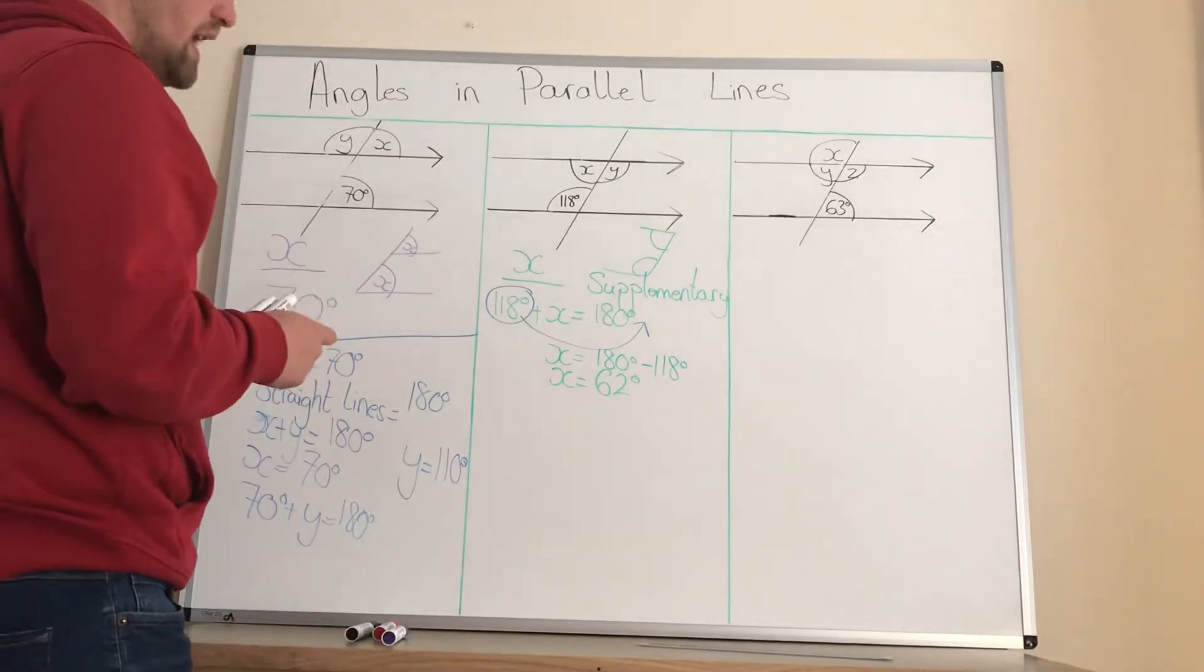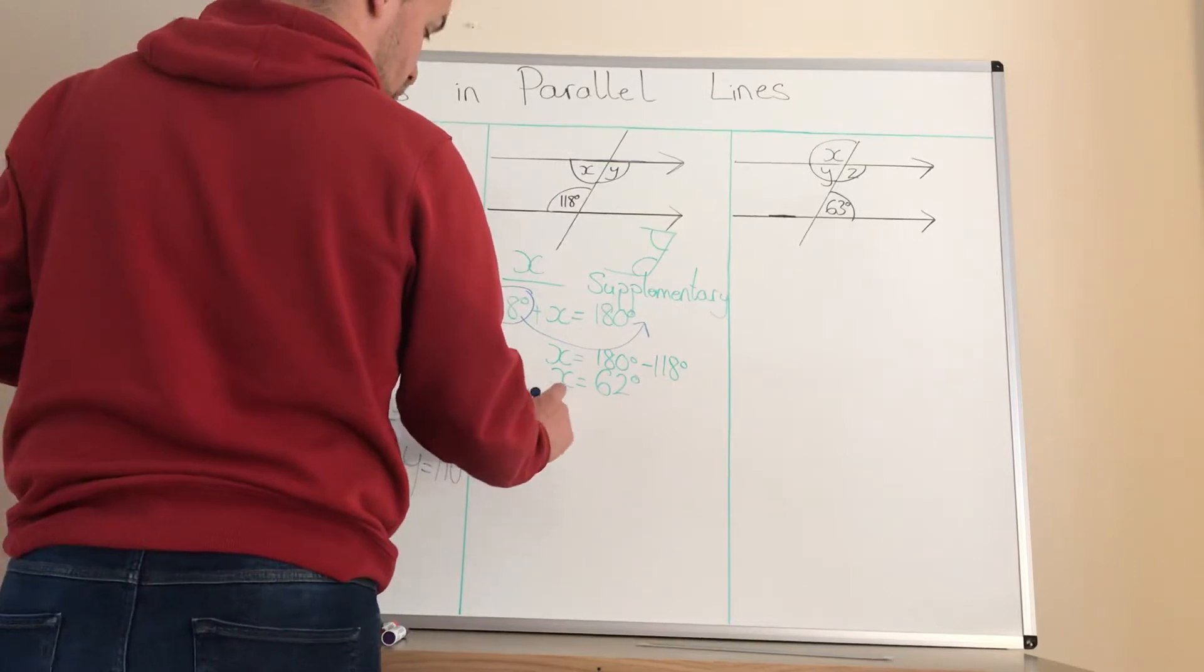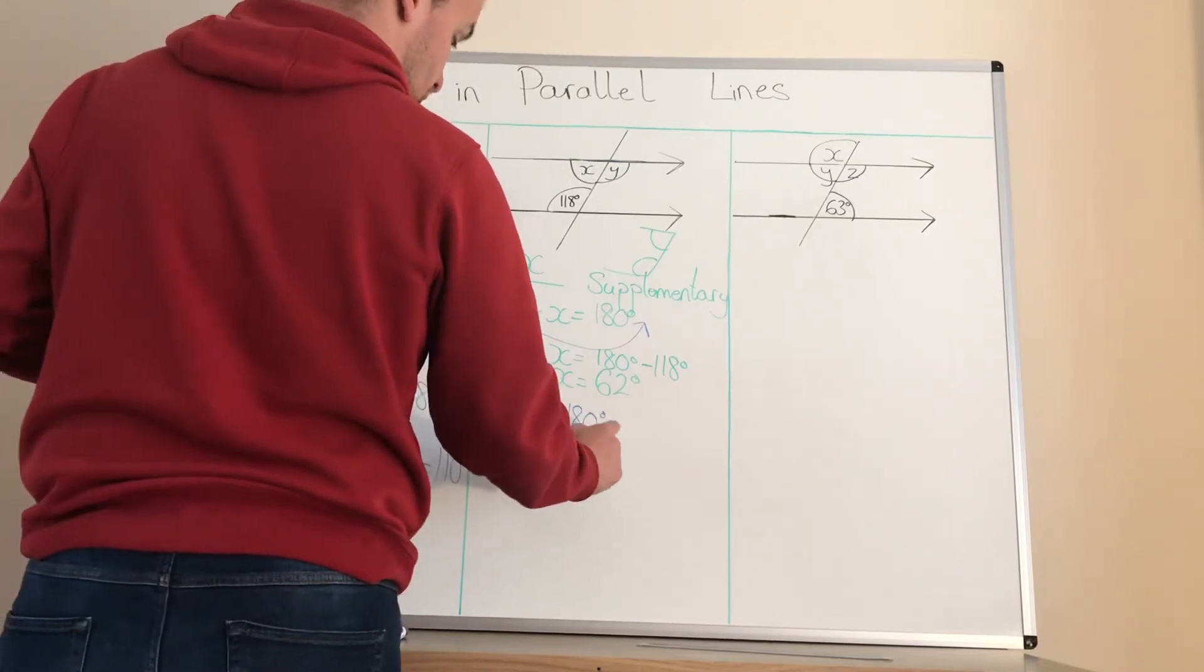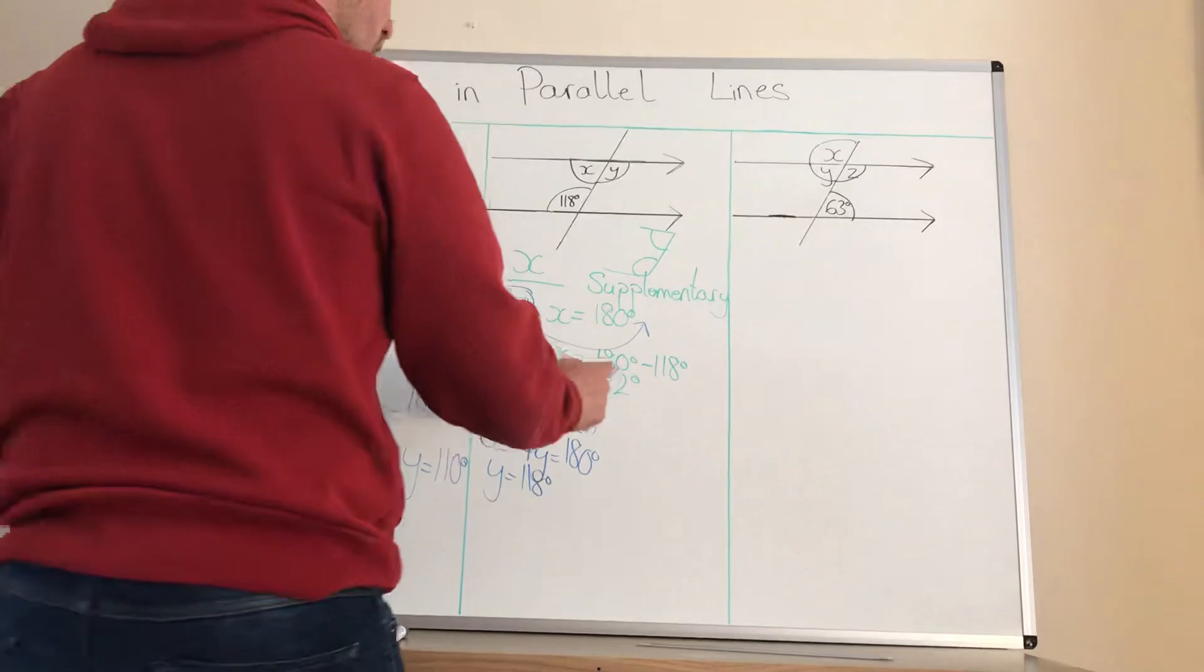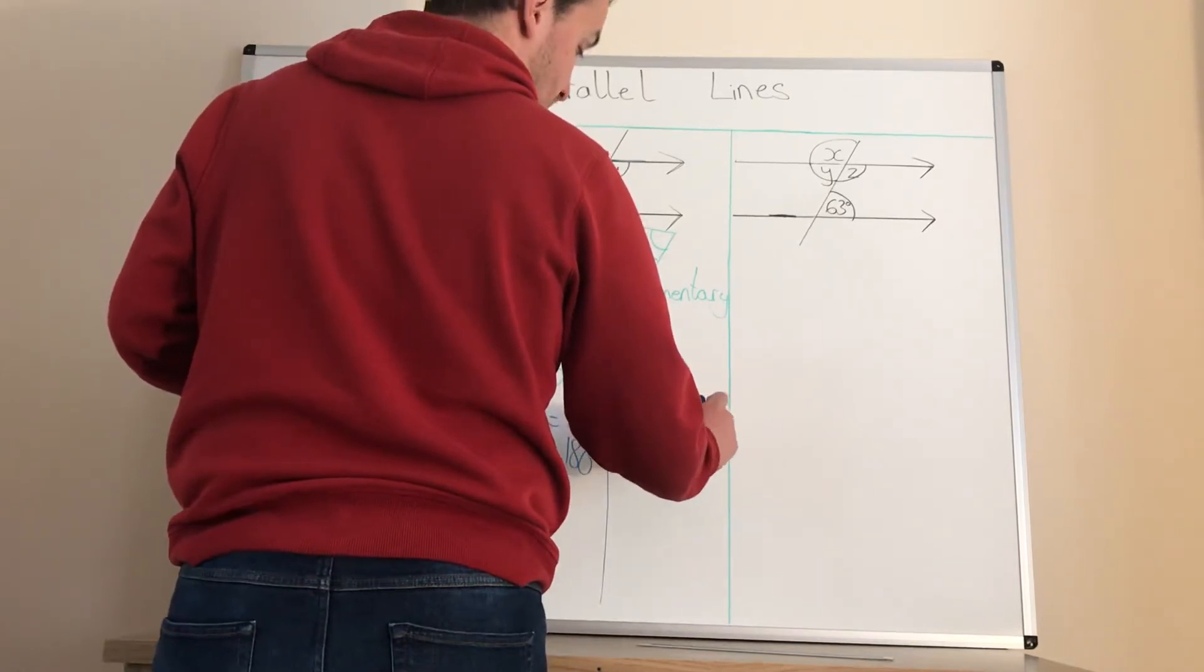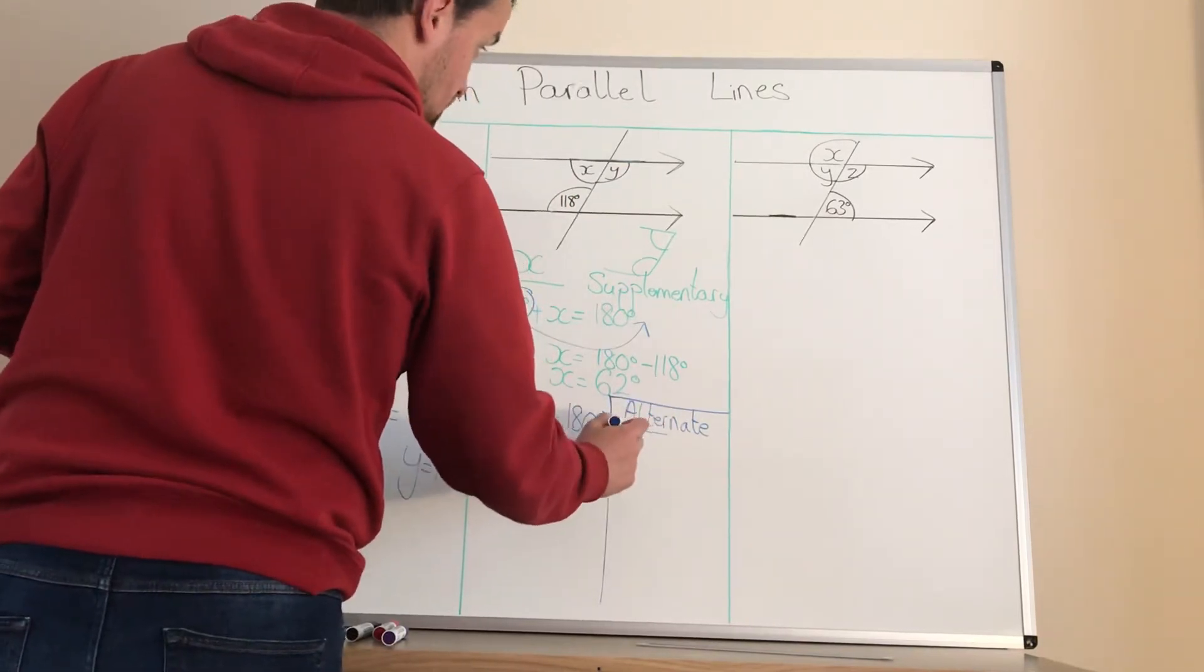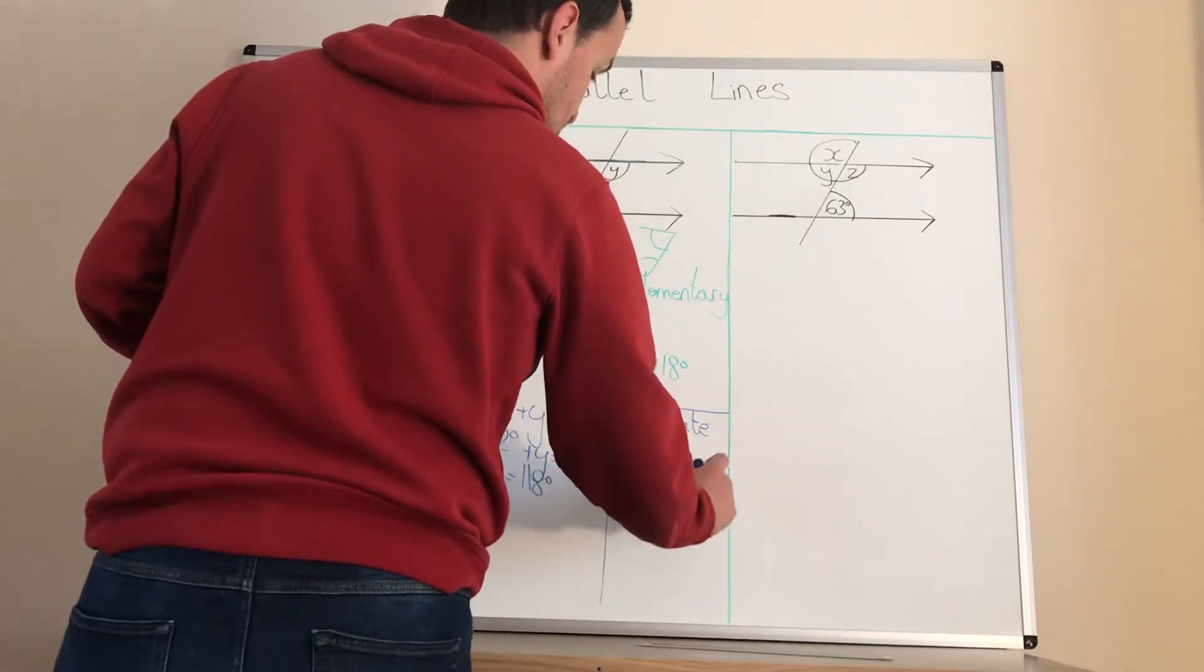Now there's two ways to work out what Y is. We can use what we did here. So in a straight line, this is your straight line here. X plus Y equals 180 degrees. We know what X is, 62 plus Y equals 180 degrees. So Y equals 118 degrees. It's what we had there. We can also use one of the other rules that we learned last lesson, which is the alternate rule. If you're not sure what they are, you need to look back. So alternate rule, whatever that is, because it's a Z-shape, a reverse Z, whatever that is there, that must also be. So Y is 118 degrees.